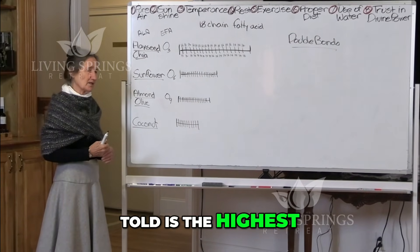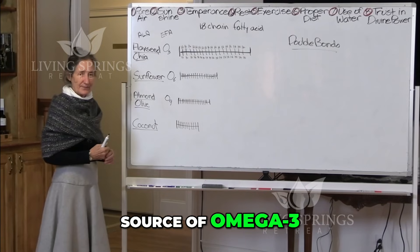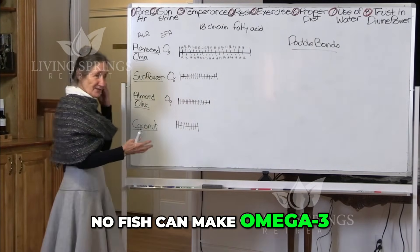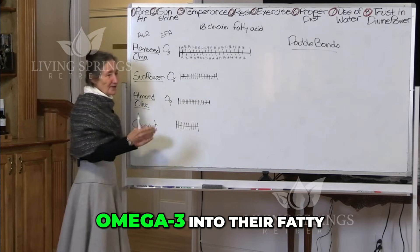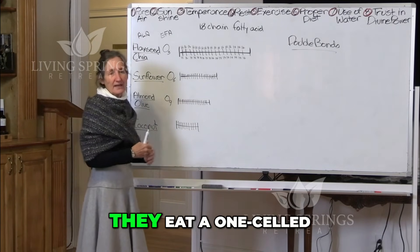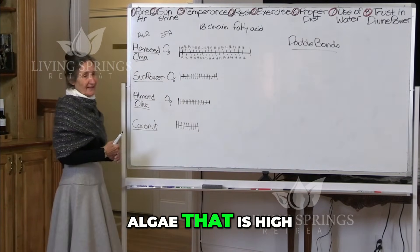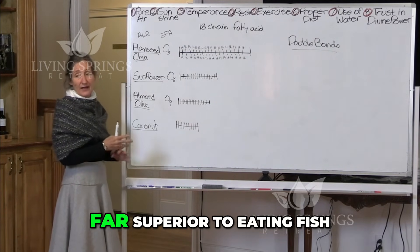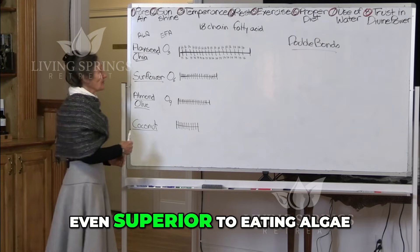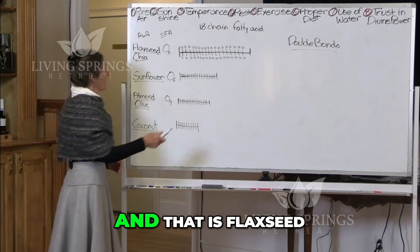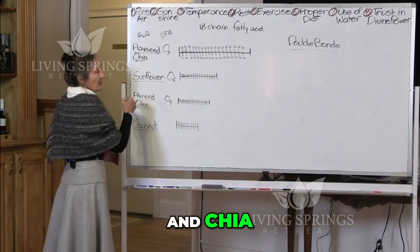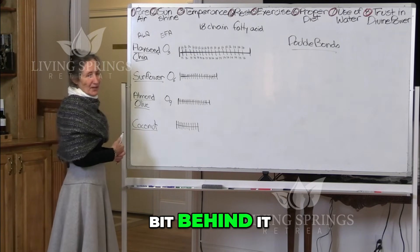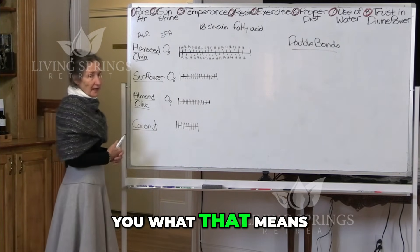But what are we told is the highest source of omega-3? Fish. No fish can make omega-3 — no fish can put omega-3 into their fatty acid chain. They eat a one-celled algae that is high in it; that's why fish have it. And we can do far superior to eating fish — even superior to eating algae — and that is flaxseed and chia. Flaxseed is the highest source; chia comes a little bit behind it.